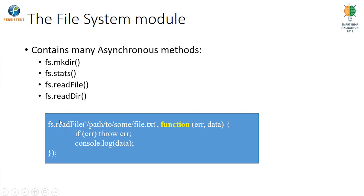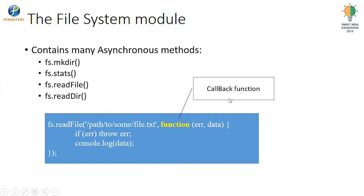Let us say I call the readFile method. We can provide a path to the file we want to read, and the second parameter is important — it denotes the callback function. Remember, all IO operations including file IO are asynchronous in Node.js by default. This will occur in a separate execution — it can be a separate thread or handled in another asynchronous manner — but it will not be part of the main single thread. Hence this callback is required: after file reading is complete, this callback will be executed.